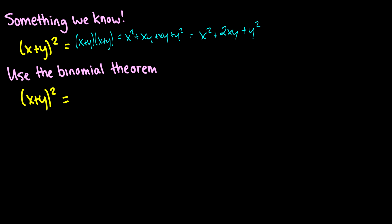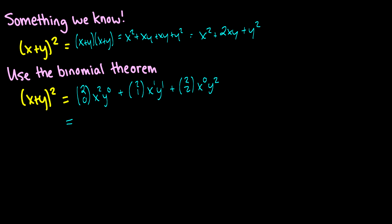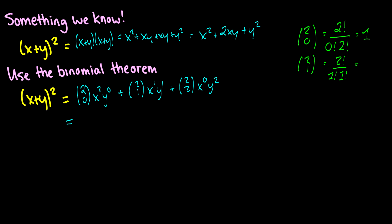Now let's do the same thing using the binomial theorem. We're going to have 2 choose 0 times x^2 times y^0, plus 2 choose 1 times x^1 times y^1, plus 2 choose 2 times x^0 times y^2. Now: 2 choose 0 is 2! over (0! times 2!), which is 1. 2 choose 1 is 2! over (1! times 1!), which is 2. And 2 choose 2 is 2! over (0! times 2!), which is 1.